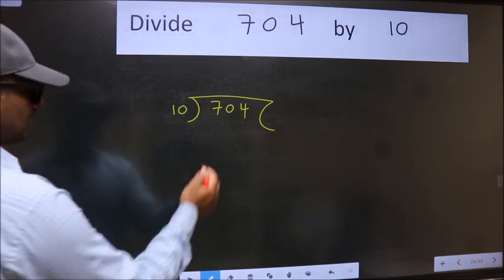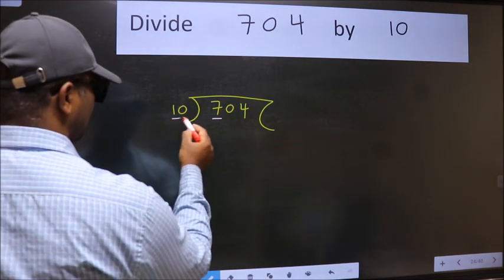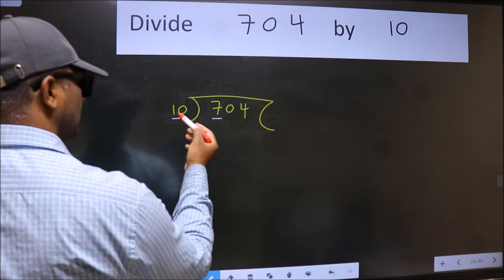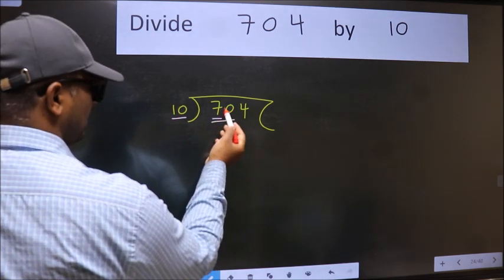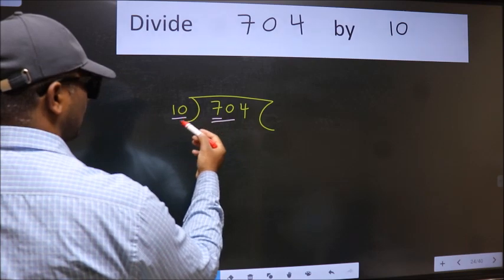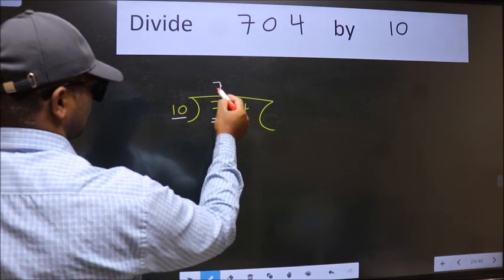Next, here we have 7 and here 10. 7 is smaller than 10, so take two numbers, 70. When do we get 70 in 10 table? 10 times 7 is 70.